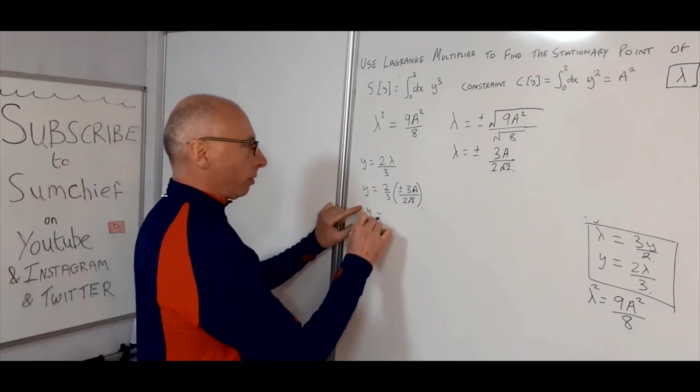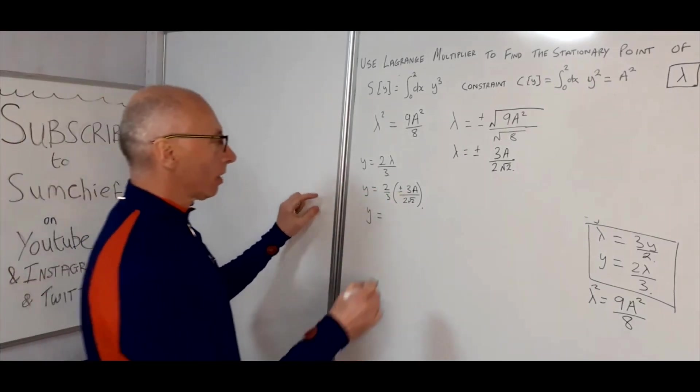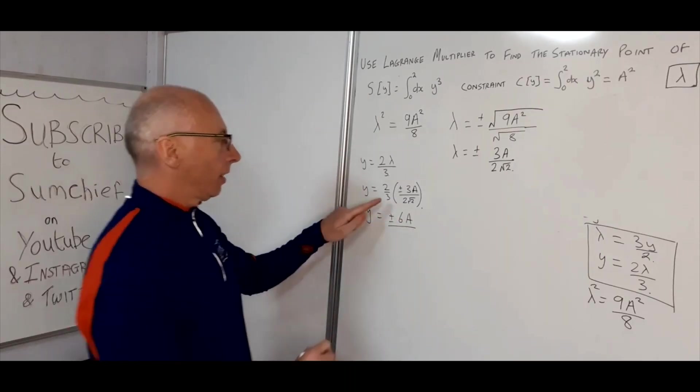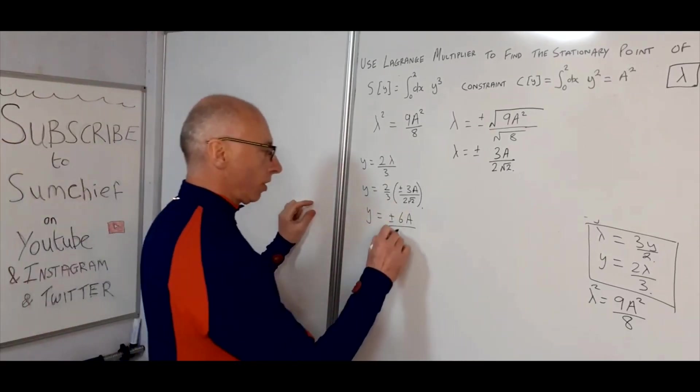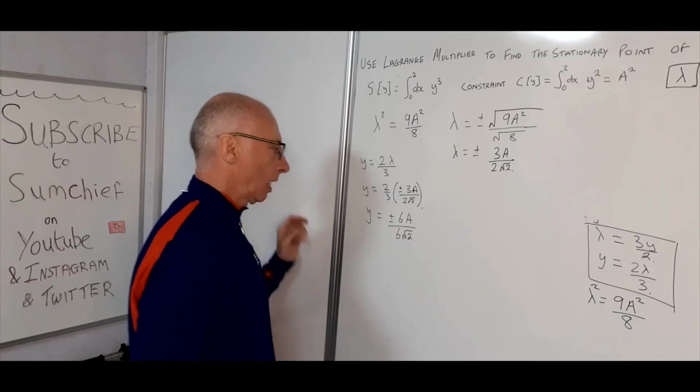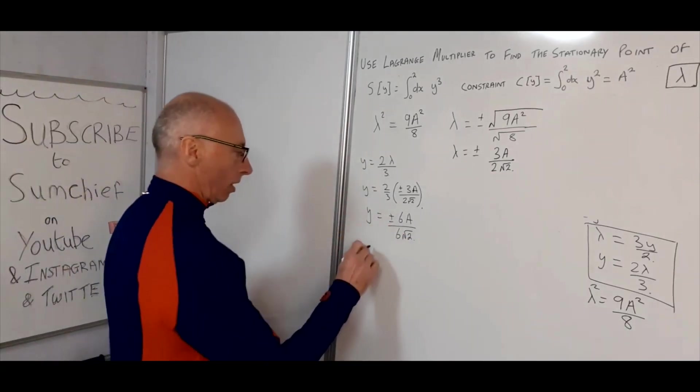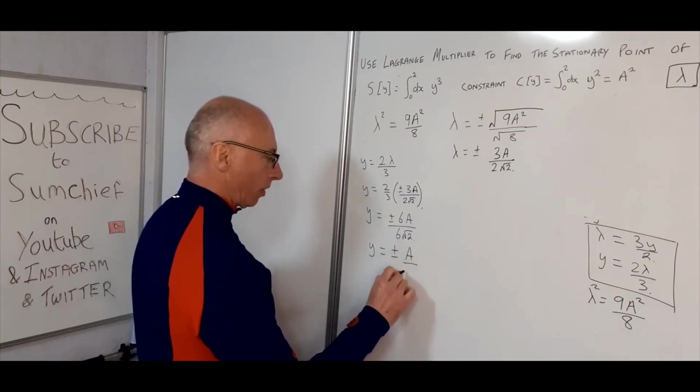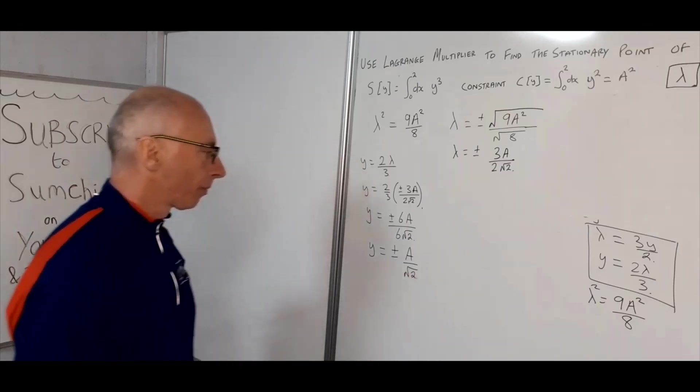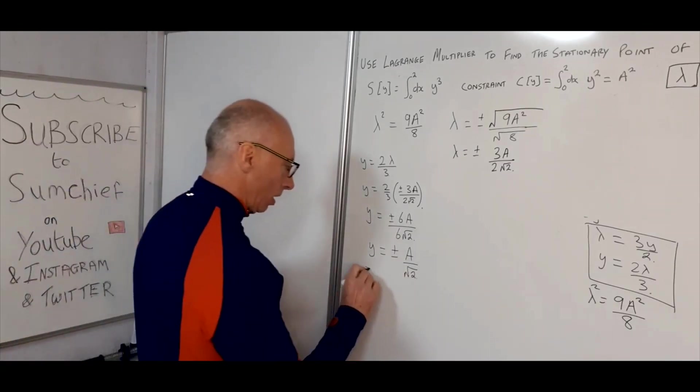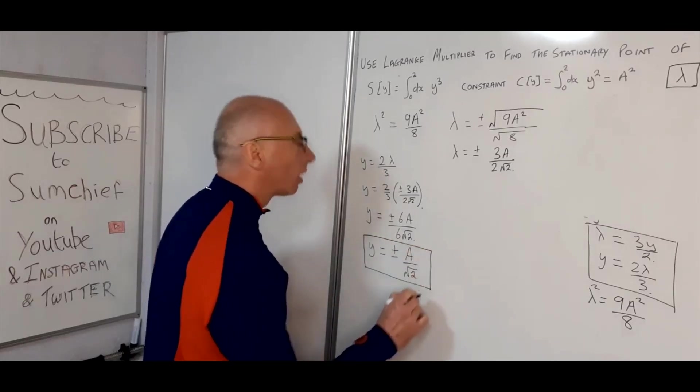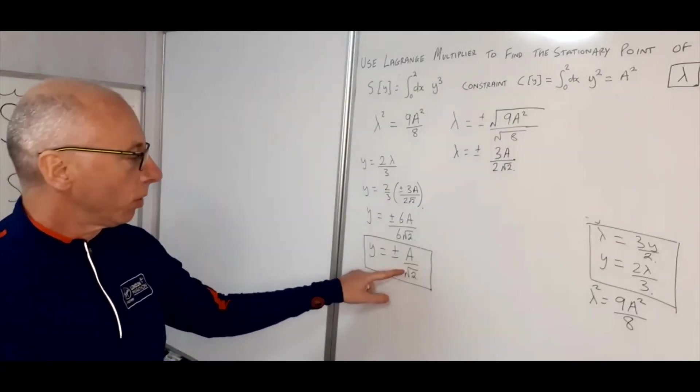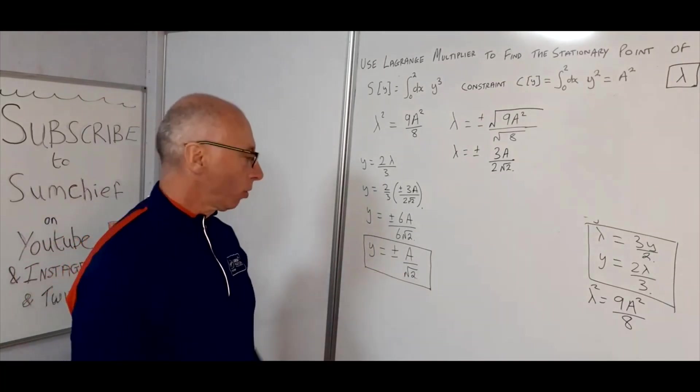So now let's continue with the algebra there. 2 times 3 is 6, so it's plus or minus 6A, and then 3 times 2 root 2 which is 6 root 2. So now we just cancel out the 6s. So therefore our Y equals plus or minus A over root 2. And that's our solution. So using our constraint, this functional is stationary by this rule when Y equals A over square root of 2 and minus A over square root of 2.